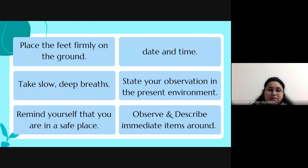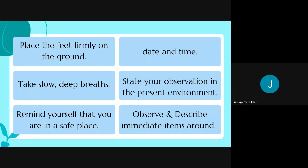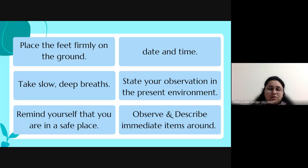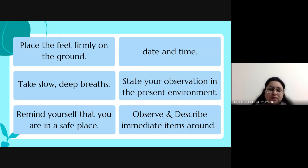Take three deep breaths: breathe in slowly, hold, and release. Do this three times. Then state what you can observe in your present environment — take notice of objects around you like your chair. You don't have to rewrite the five things from before — just notice if there are any additional things you can see. Then remind yourself that you are in a safe space right now — there is no danger, no threat or challenge in the environment.